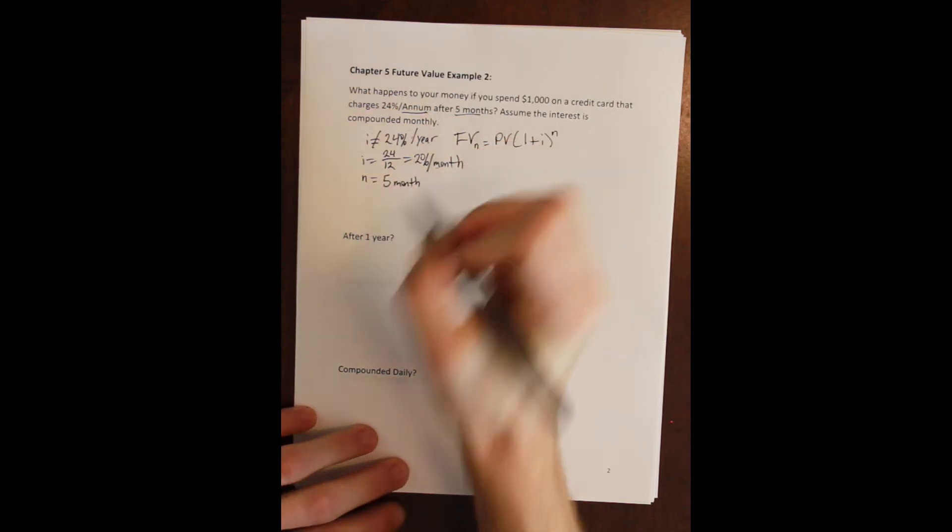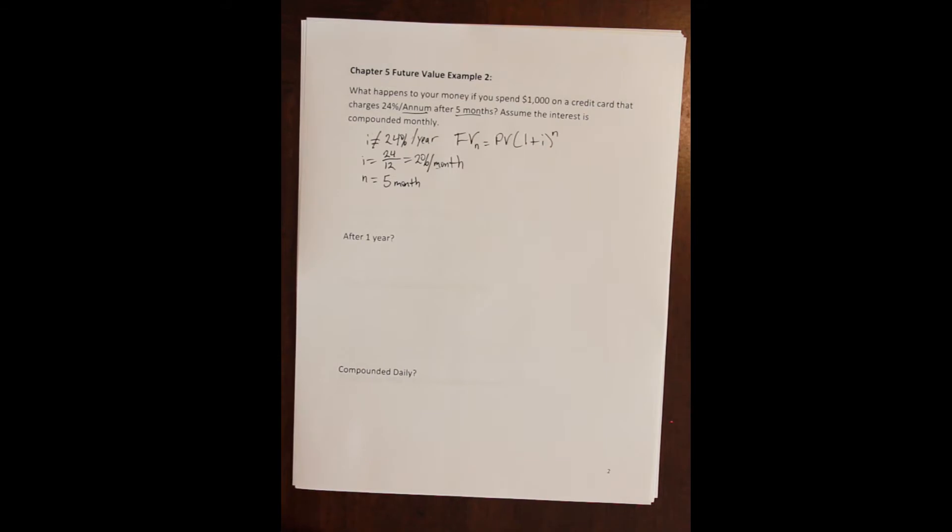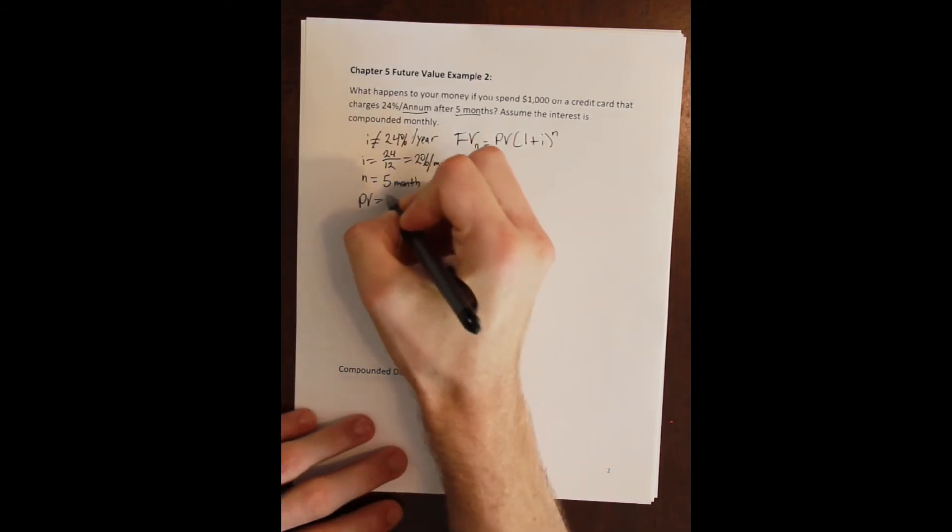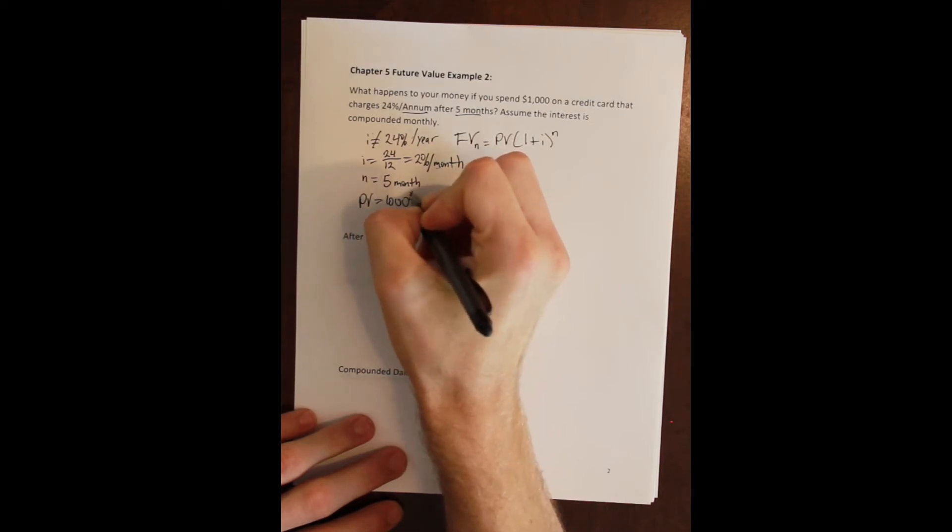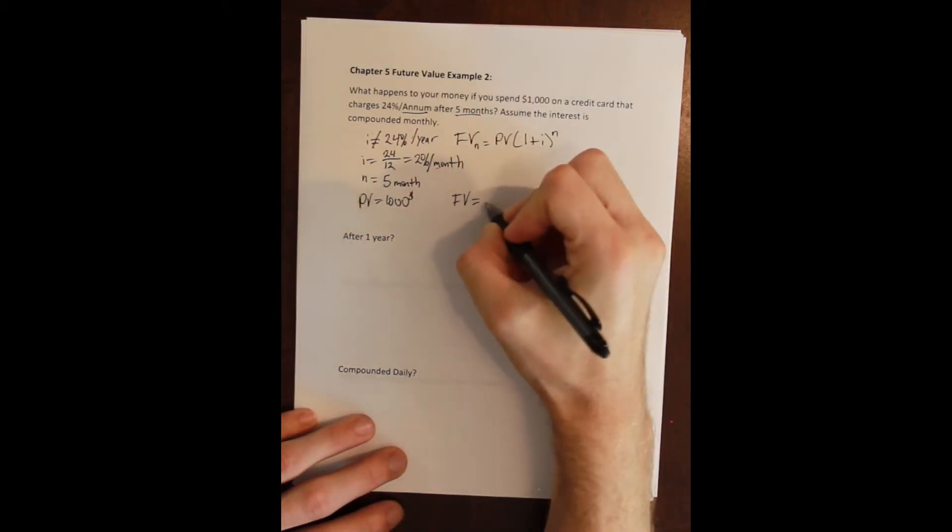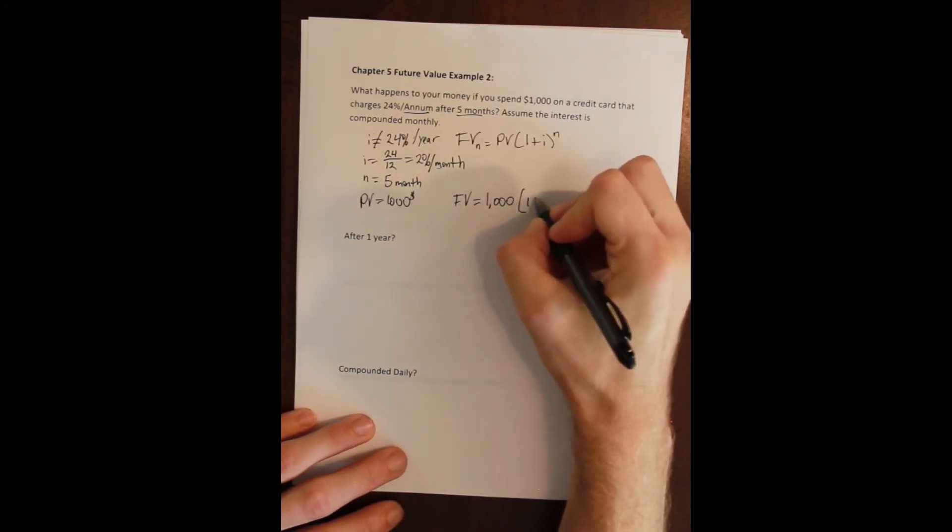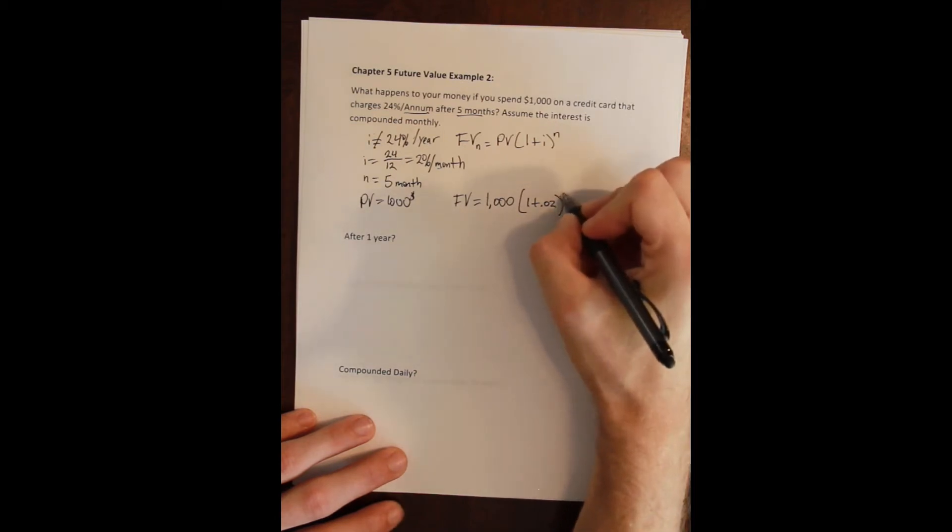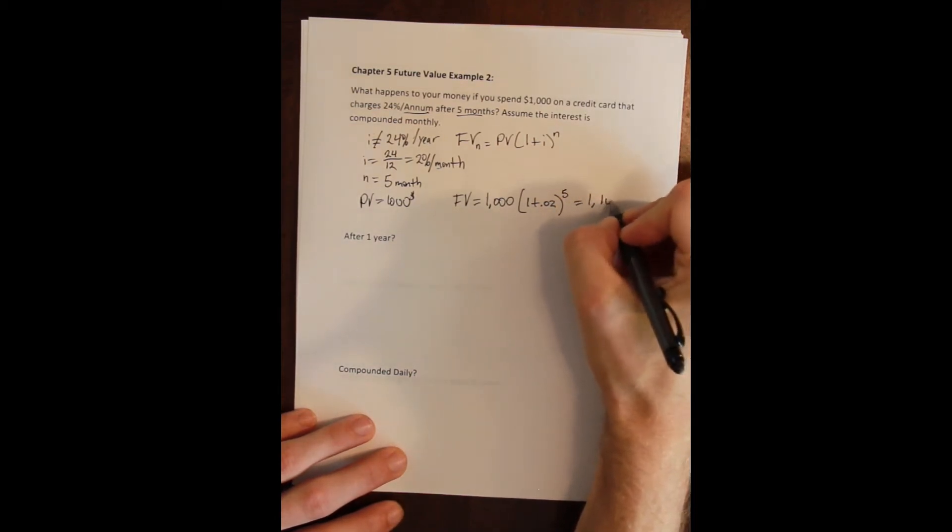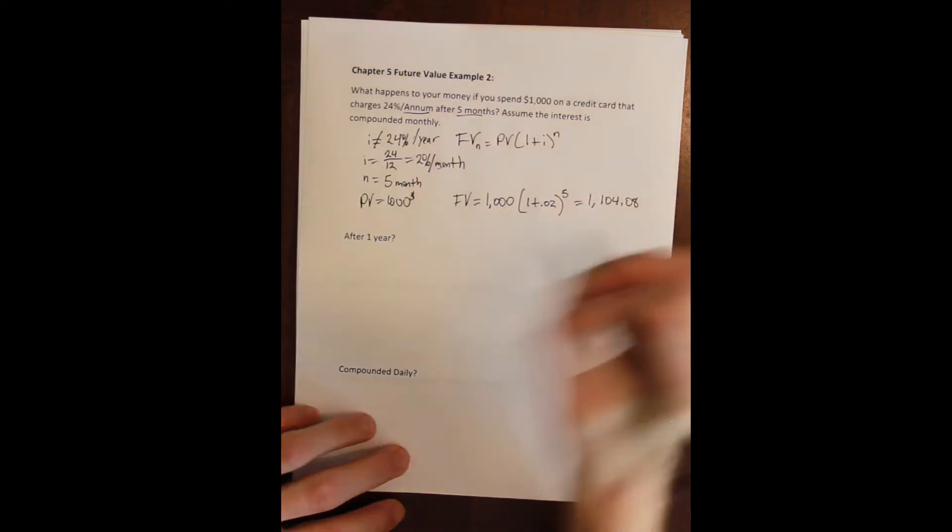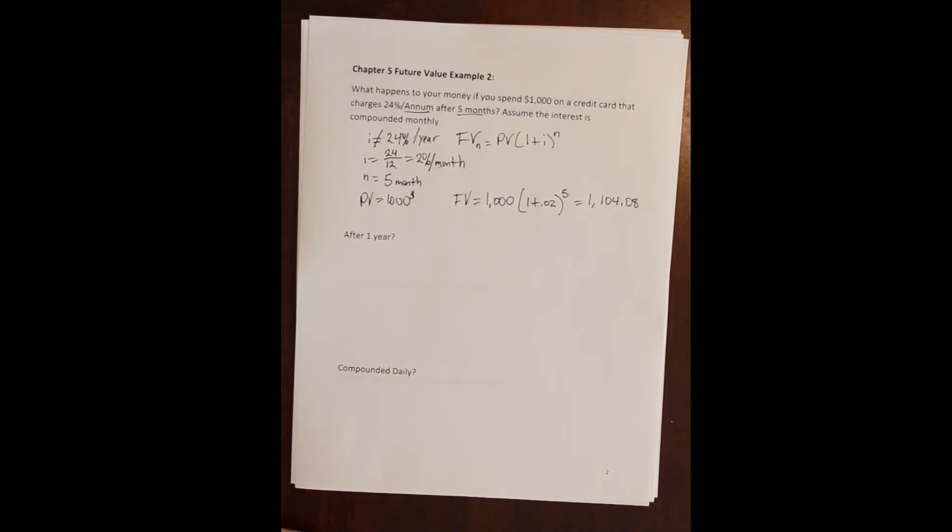So we can plug all this into our formula. Future value here: one thousand dollars times 1 plus 0.02 percent per month for five months is equal to 1,104.08. So after only five months a thousand dollars earns a hundred dollars in interest on a credit card.